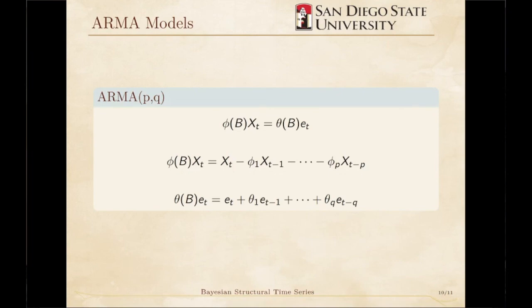The AR(1) and MA(1) models can be extended and combined to form an ARMA model. A general ARMA process is usually written like this. φ(B) is the AR part, which is a linear combination of previous values of the series Xt. And θ(B) is the MA part, which is a linear combination of previous error terms.